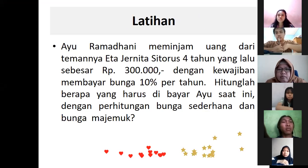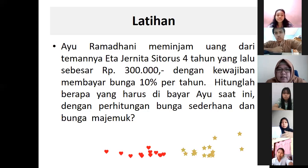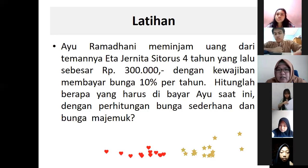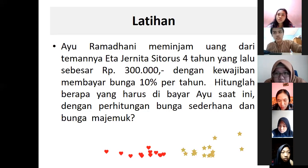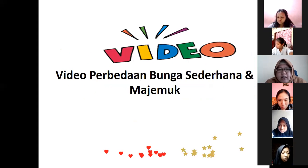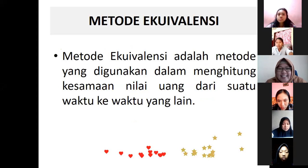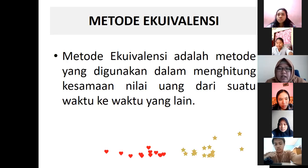Ini latihan, ada yang kerjain? Sudah. 612 ribu bunga kalau bunga sederhana. Udah nengok videonya ya, nengok sendiri aja. Kalau ada pertanyaan, tanya Ibu. Kita masuk ke metode ekivalensi. Metode yang digunakan dalam menghitung kesamaan nilai uang dari suatu waktu ke waktu. Ini kayak Ibu cerita dari awal, zaman Ibu dulu beli sate 500 rupiah itu udah dapat satu bungkus. Sekarang 10 ribu, 7 ribu gitu kan. Intinya tuh sebenarnya nilainya sama, cuma harganya dulu zaman Ibu 400 perak, sekarang udah 7 ribu. Bentuknya tetap sate.